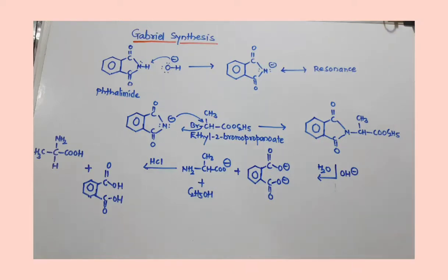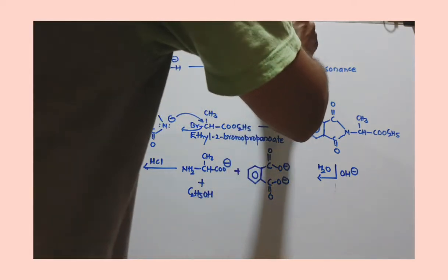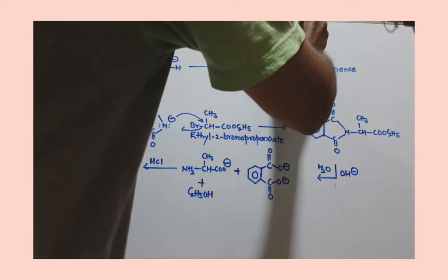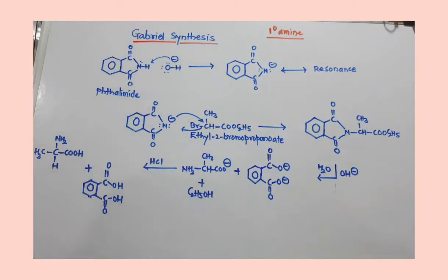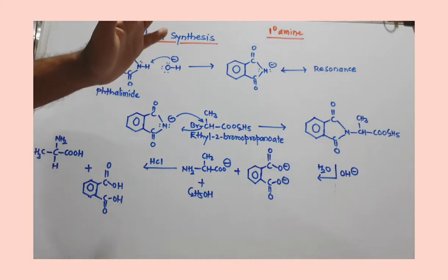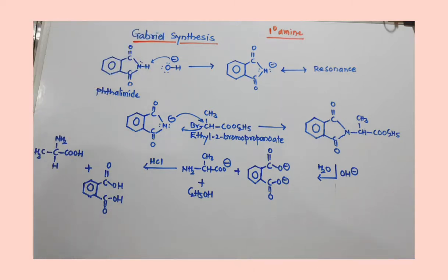Another synthesis is Gabriel synthesis. By using this synthesis we can prepare primary amines. When we use alkyl halide, we can prepare primary amines by using this synthesis. But when we use alpha-halo-ester, we can prepare alpha amino acid.